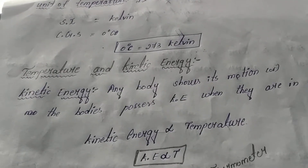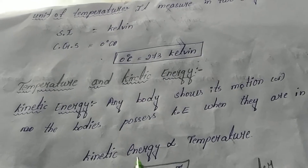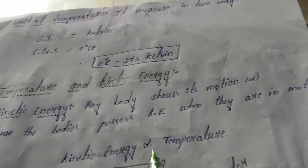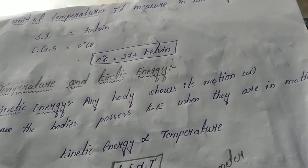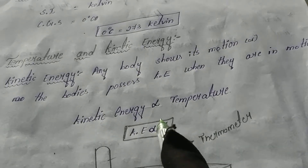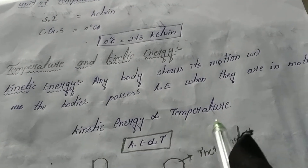In this chapter, we have an important relationship between temperature and kinetic energy. First, we need to know what kinetic energy is. Any body possesses kinetic energy when it is in motion. The kinetic energy is directly proportional to the temperature — meaning if kinetic energy is increasing, temperature is also increasing, and when kinetic energy is decreasing, temperature is also decreasing.